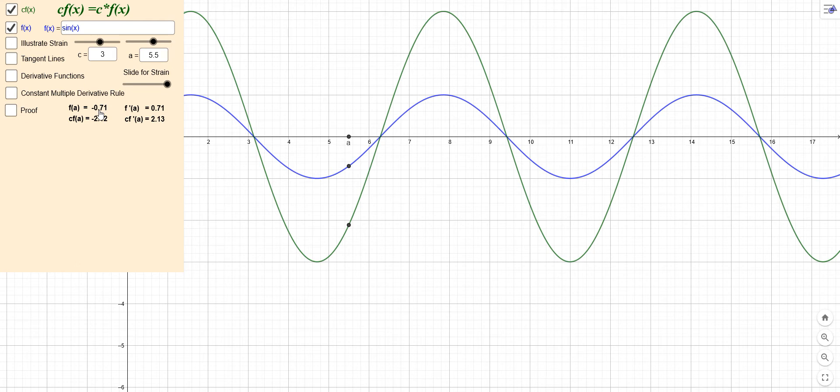Okay, so let me show you here. For example, now there might be some rounding here, but here I have f(a) is negative 0.71 and c times f(a) is negative 2.12. Okay, a slight bit of rounding off on that one because these are rounded off values. But can you see that the value here is three times the value there? Like I said, just slightly off because of some rounding.